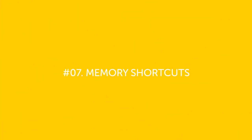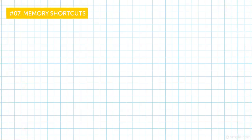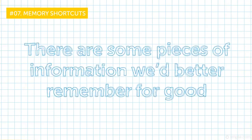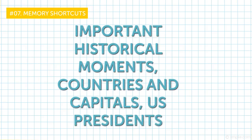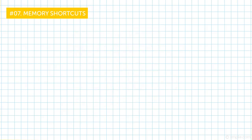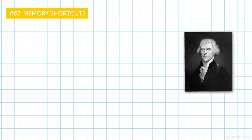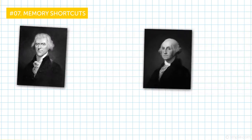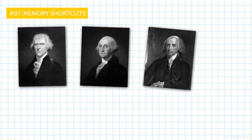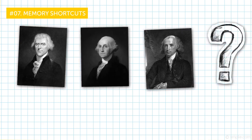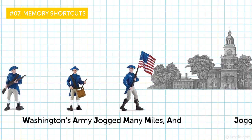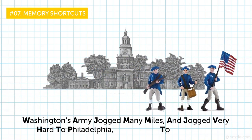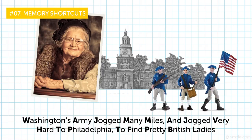Number seven, memory shortcuts. There are some pieces of information we'd better remember for good. Important historical moments, countries and capitals, U.S. Presidents. Can you name the first 16 of them? Washington definitely, and then it was Jefferson or Madison. I can't tell you, but I can definitely tell you that Washington's army jogged many miles and jogged very hard to Philadelphia to find pretty British ladies. Makes no sense? Oh, yes, it does.